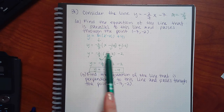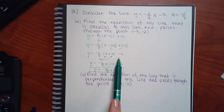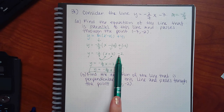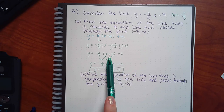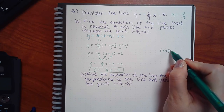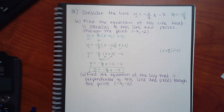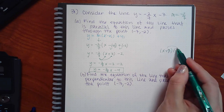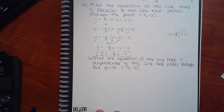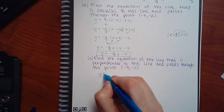When distributing, remember: the slope only multiplies what's inside the parentheses. The multiplication stops when those parentheses stop — you never take that term and multiply it all the way through to the constant.